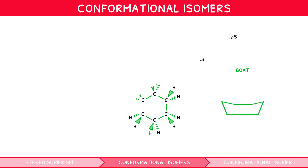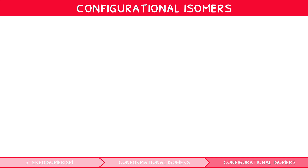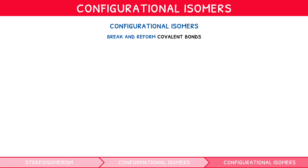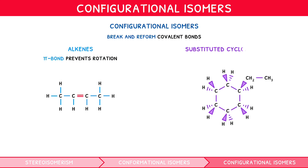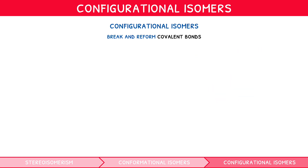With conformational isomerism covered, we can now move on to configurational isomers — a far more frequently examined section of the syllabus. Configurational isomers can only interconvert by breaking and reforming covalent bonds, i.e. not by rotation around a sigma bond. They occur within alkenes, where the pi component prevents rotation, and in substituted cycloalkanes, where the ring prevents this. Configurational isomers can be divided into two groups: cis-trans and optical isomers.